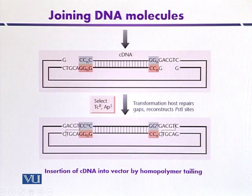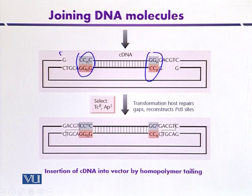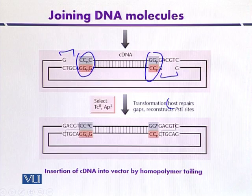Now, these two sources of DNA — from the vector and the cDNA — are mixed together. Because of the complementarity of the homopolymer tailing, they will join together. Cytosine will pair with guanine, and a few gaps will be created that may be repaired when we transform it into a suitable host organism. The host repair machinery will fill in the gaps in the transformant DNA.